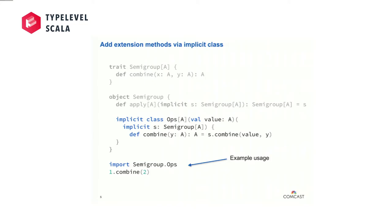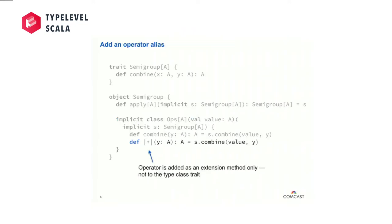We're using an implicit class — it's not a value class, which I might get into a bit later. The idea is that we're going to capture the left-hand side value that we're invoking some operator on, curry that into this ops class, and delegate through our semigroup definition. Once we do that, everybody loves operator aliases — or at least the C++ programmers do, as we learned earlier today. So we can add this |+| operator alias and implement it the exact same way.